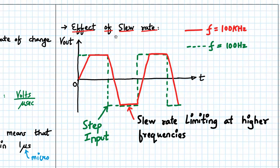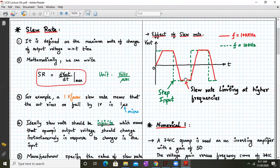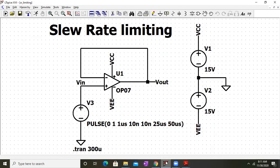So the red colour curve is measured at 100 kHz and we can clearly see the slew rate limiting at the higher frequency. Now let us cross check this result in LTSpice. So we have built a circuit of voltage follower wherein we have applied a square wave pulse to the non-inverting terminal.